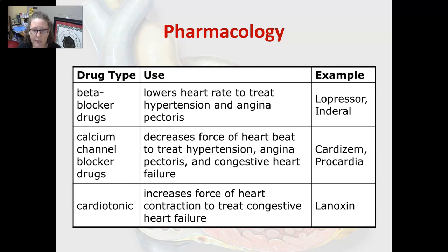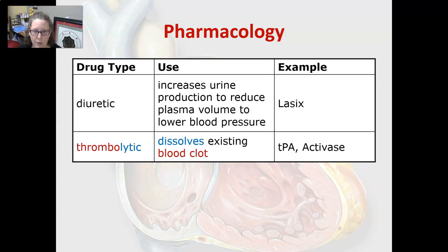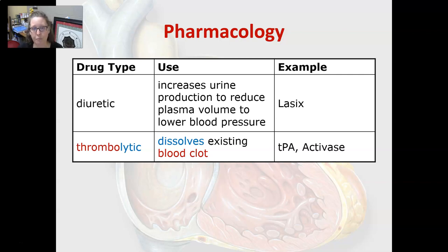A cardiotonic increases the force of heart contraction to treat congestive heart failure — Lanoxin is one example. A diuretic increases urine production to reduce plasma volume and lower blood pressure. It makes you urinate a lot. Lasix is one of them.